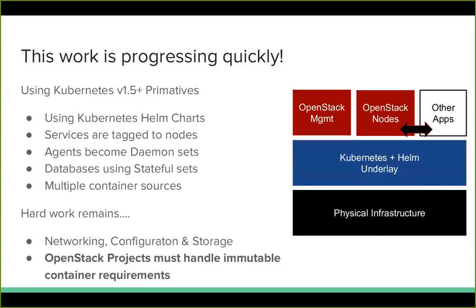There's something called daemon sets that allow you to take a container, schedule it through Kubernetes, but treat it like a trusted hosted node — which you need to do for a lot of OpenStack services. A lot of these charts use daemon sets. Databases are using stateful sets, so they have to have that persistent layer through Ceph. The AT&T team really wanted multiple sources of containers — you could use the Stack containers, you could use the Kolla containers. There are a lot of choices you can make in these deployments, so even though it's Kubernetes it still isn't overly opinionated. Right now it feels like they've got a good balance.